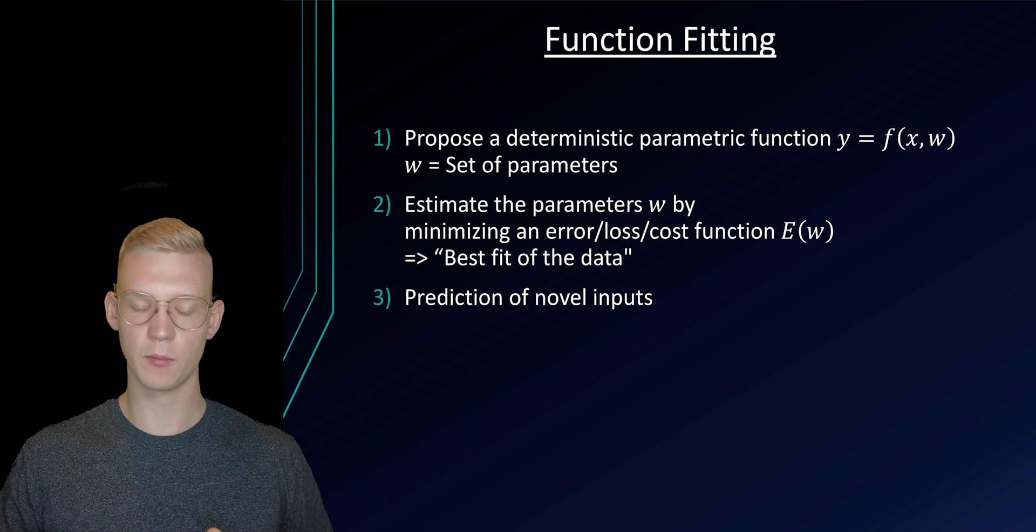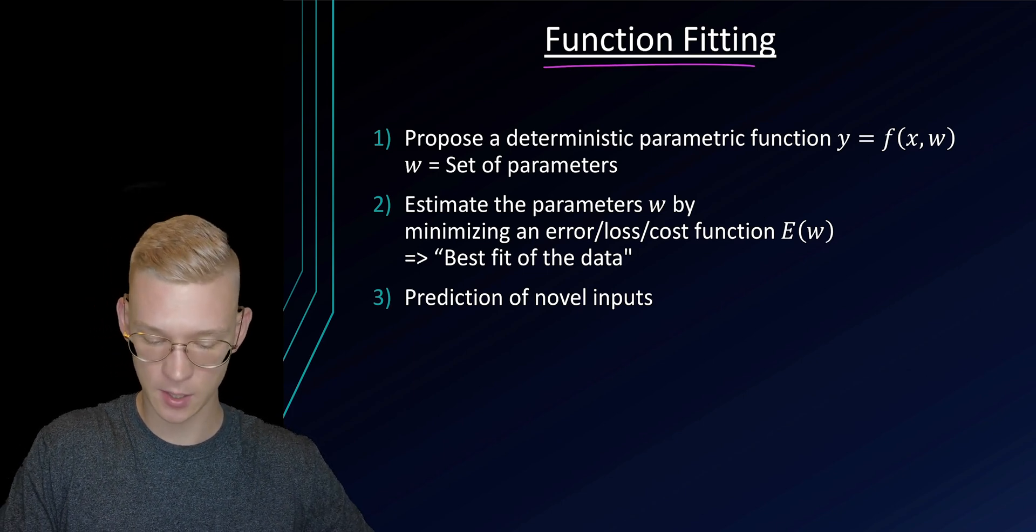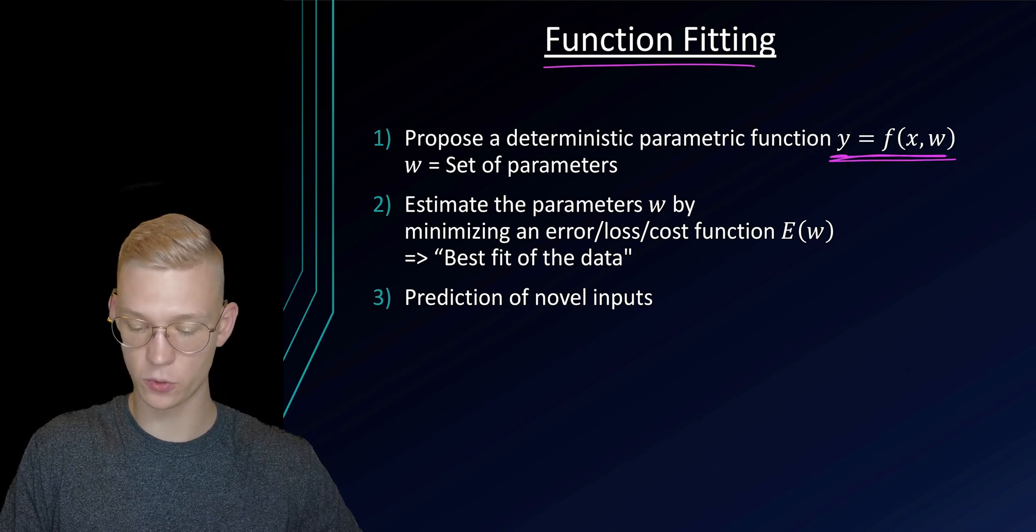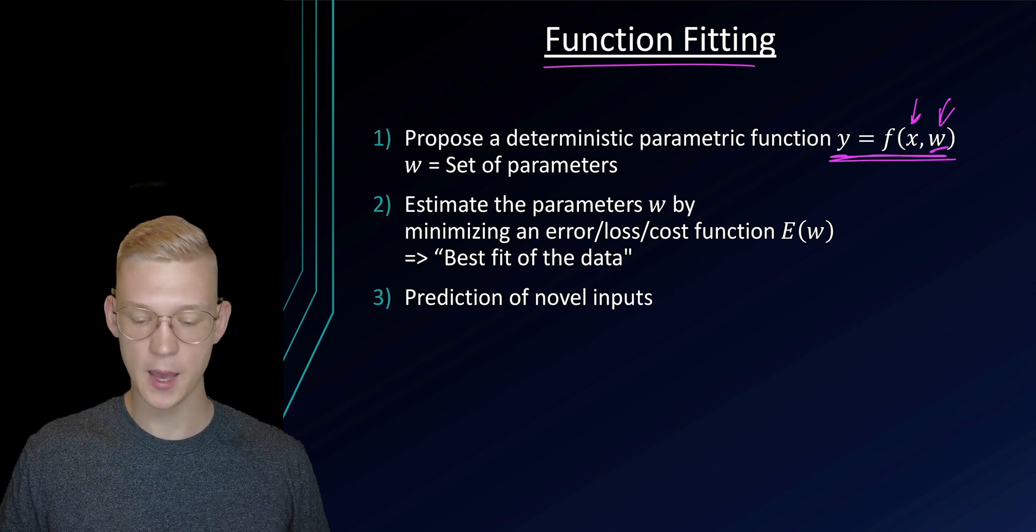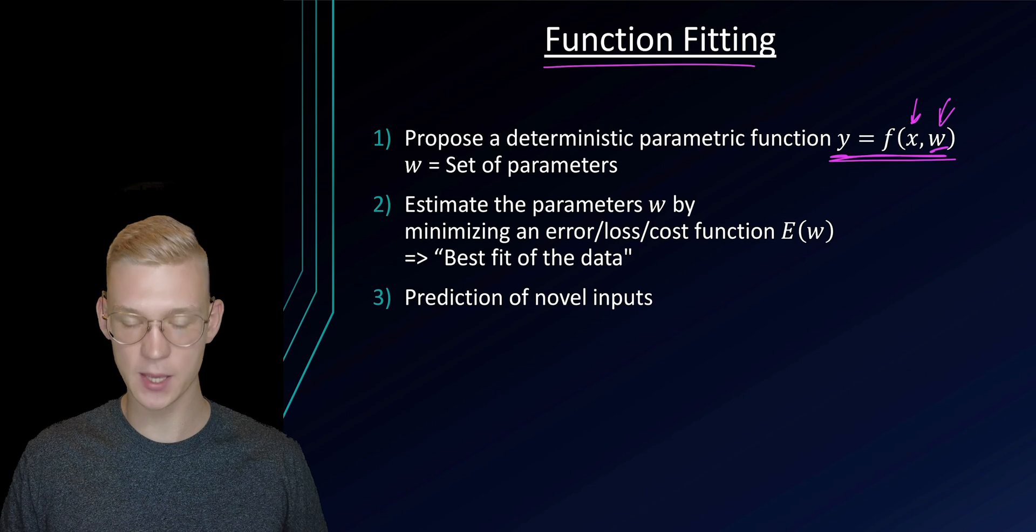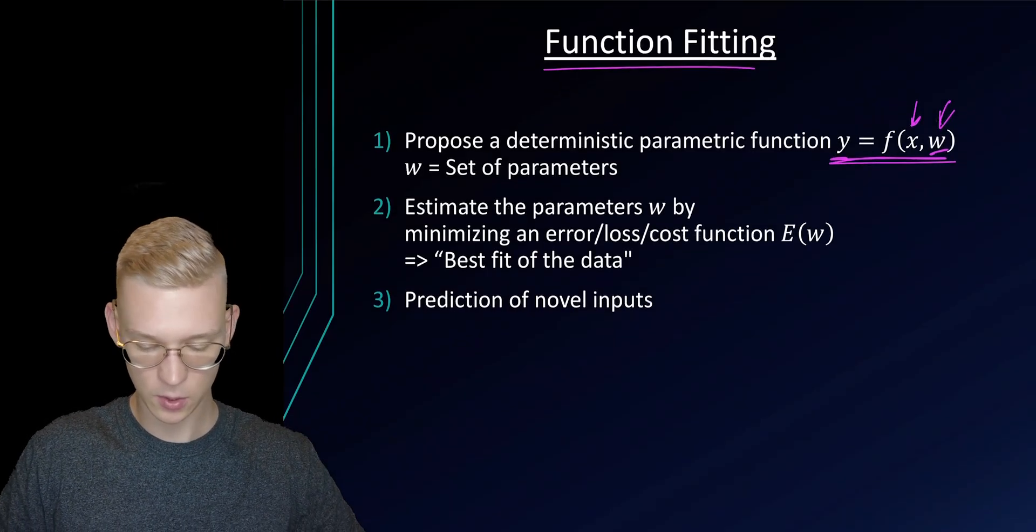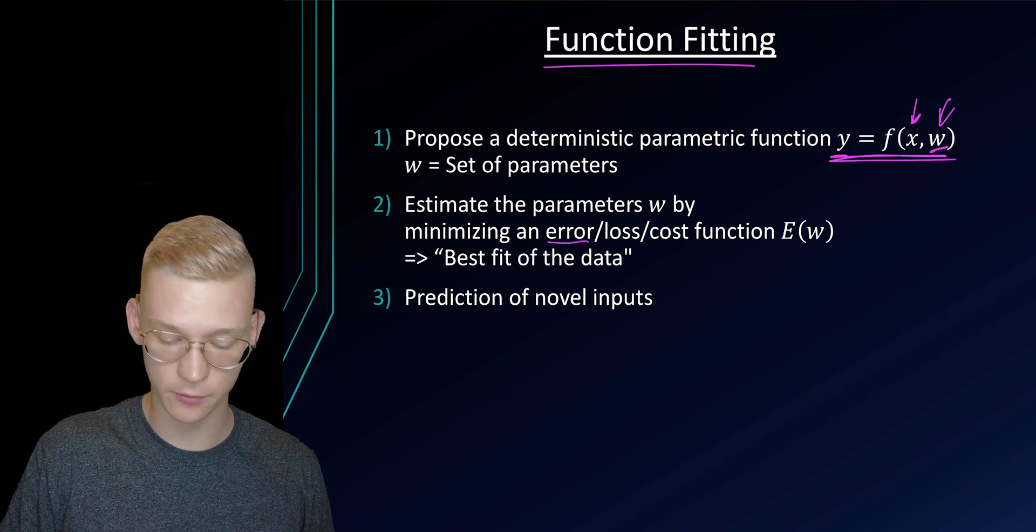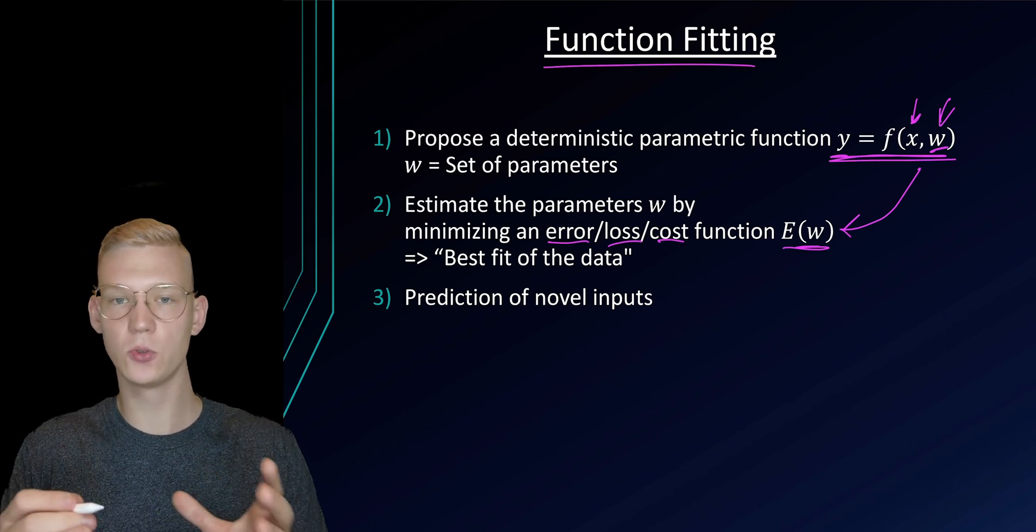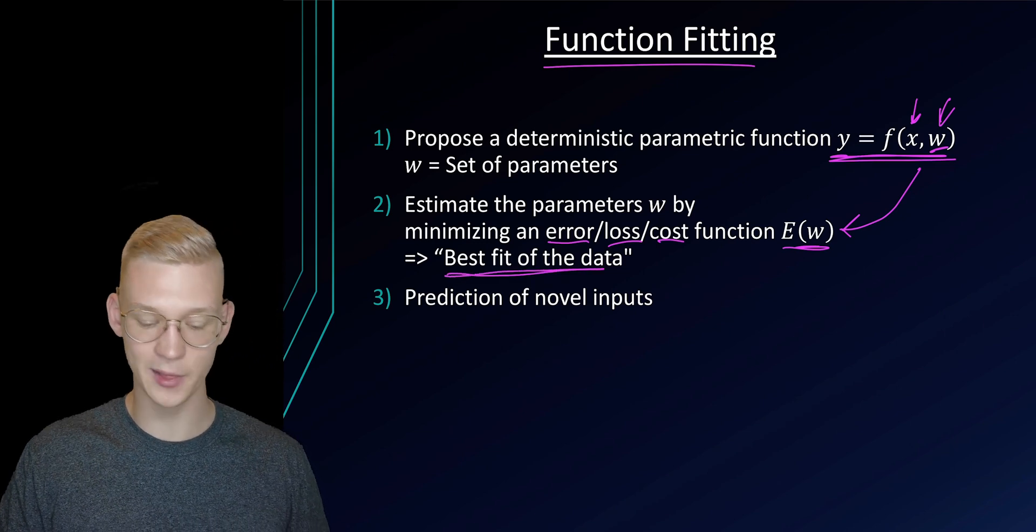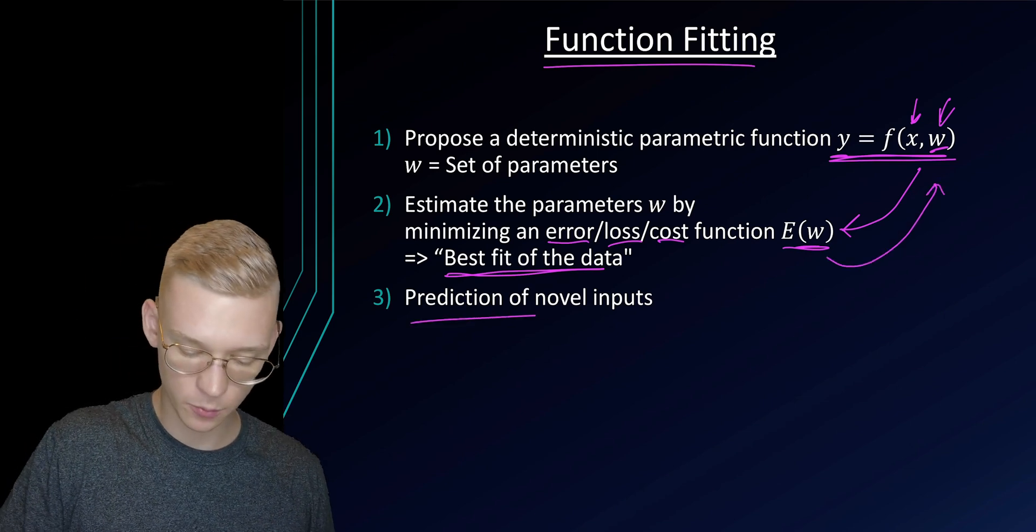When we talk about regression it's a little bit more complex than function fitting. And function fitting is basically just a deterministic process where we have a function or we propose a structure for our function with parameters w and x as our input. And we want to estimate or change those parameters as much as possible to get the most accurate results of our data set. So in the data set we change them with the help of the error function. So we will define an error function or loss or cost function that is dependent on our parameters and then we will try to tweak those parameters to get a best fit of our data. We will later define what the best fit actually is. And as soon as we know these parameters and the given structure that we defined we will predict novel inputs.